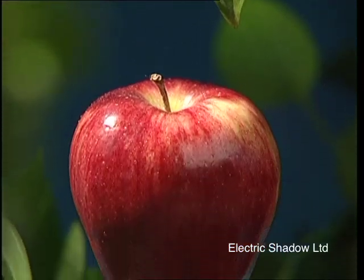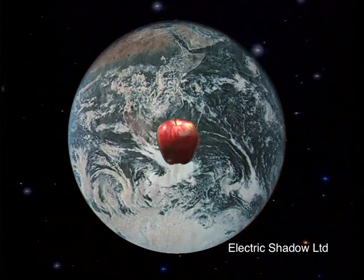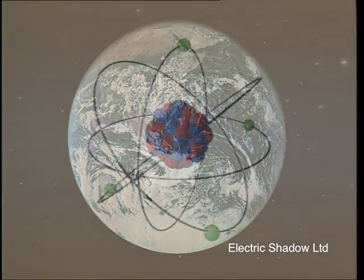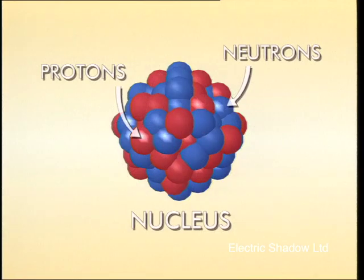Comparing the size of an atom to an apple is like comparing the apple to the Earth. The atom is itself made up of even smaller pieces. At the centre of each atom is a cluster called a nucleus. It is composed of protons and neutrons.